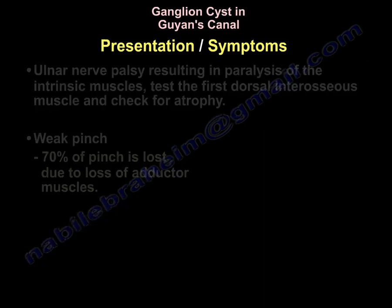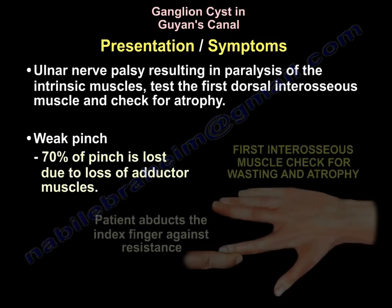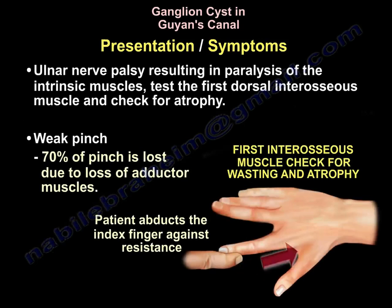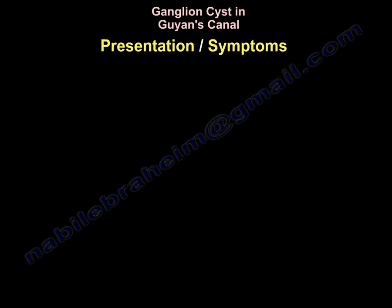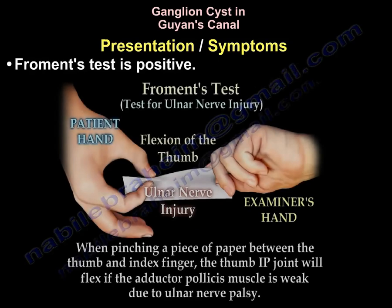You will likely find atrophy and wasting of the first interosseous muscle. There will be weak pinch due to loss of the adductor muscle. The Froment's test will be positive due to weakness of the adductor pollicis muscle, and here you can see how the Froment's test is performed.